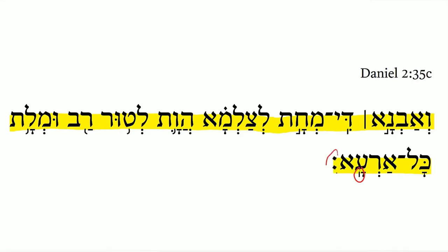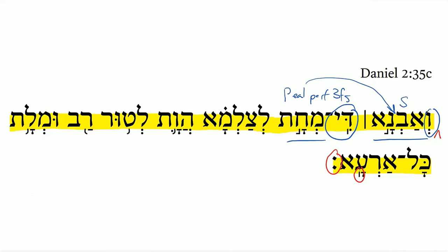And that brings us to the end of the verse, the Seleuk Sof Pasuk. As a reminder, we just finished reading up to the Atnach before Daniel 2:35c. So we begin here with this conjunction — we have the stone — and a relative marker. This is the first of several verbs, all perfect, third feminine singular. It's third feminine singular because it's matching its subject, which is feminine: the stone. And the stone that struck — direct object marker — struck the image.